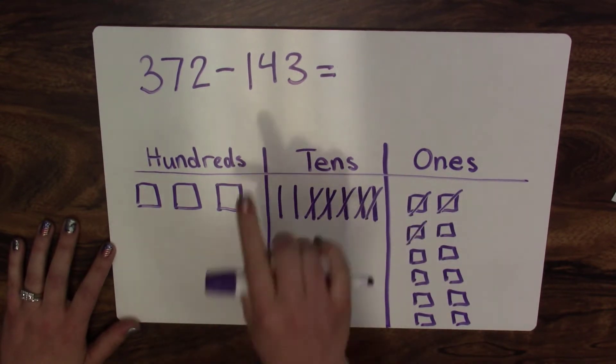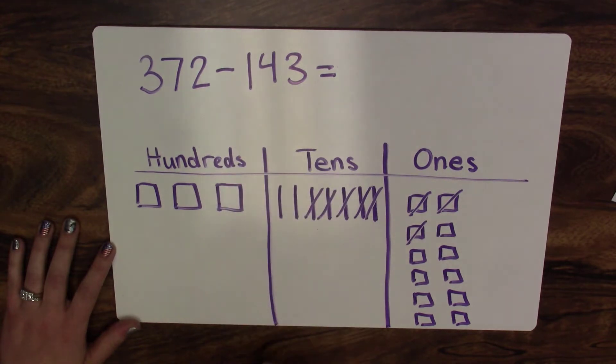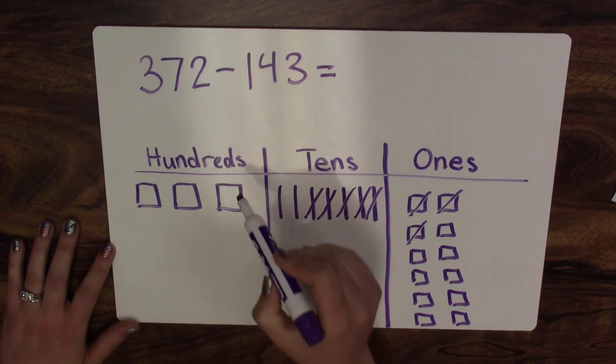Now when I look at the hundreds, I have a one in my hundreds place value. So I'm going to take one hundred flat away.